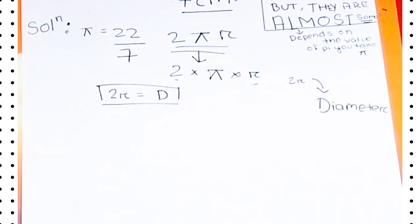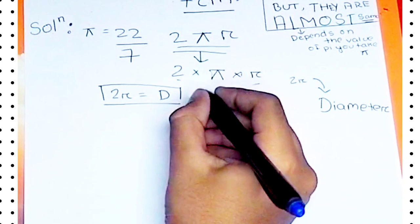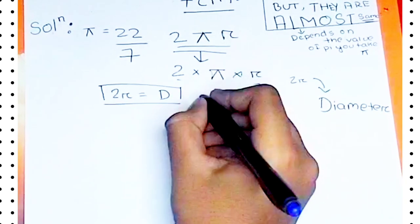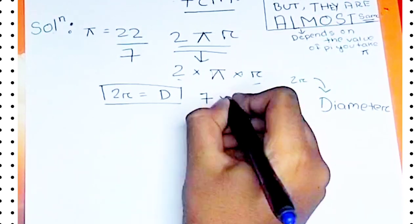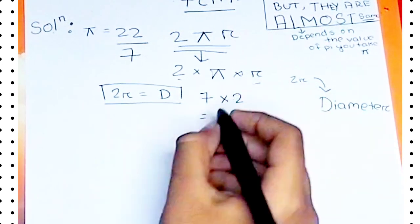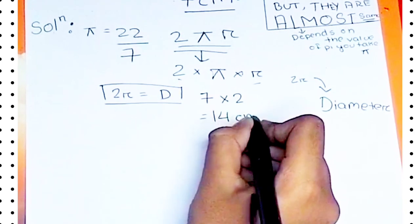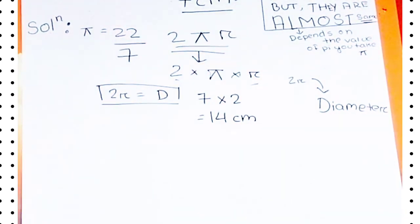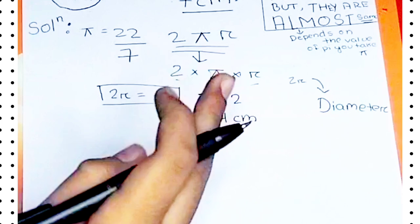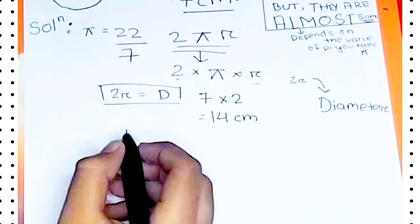We need to find the diameter first of all. So what we will do is multiply 7 by 2. 7 times 2 is equal to 14 centimeters. 14 centimeters is the diameter of the circle.